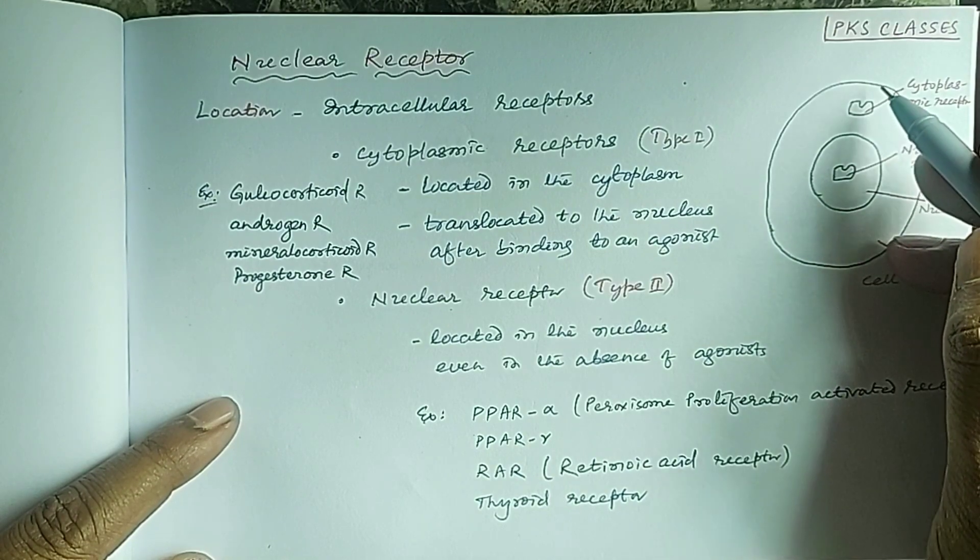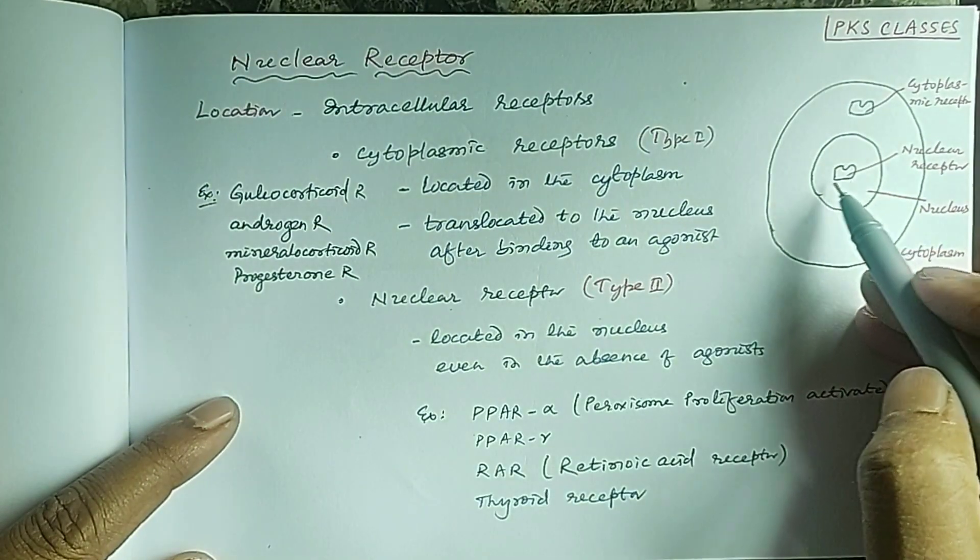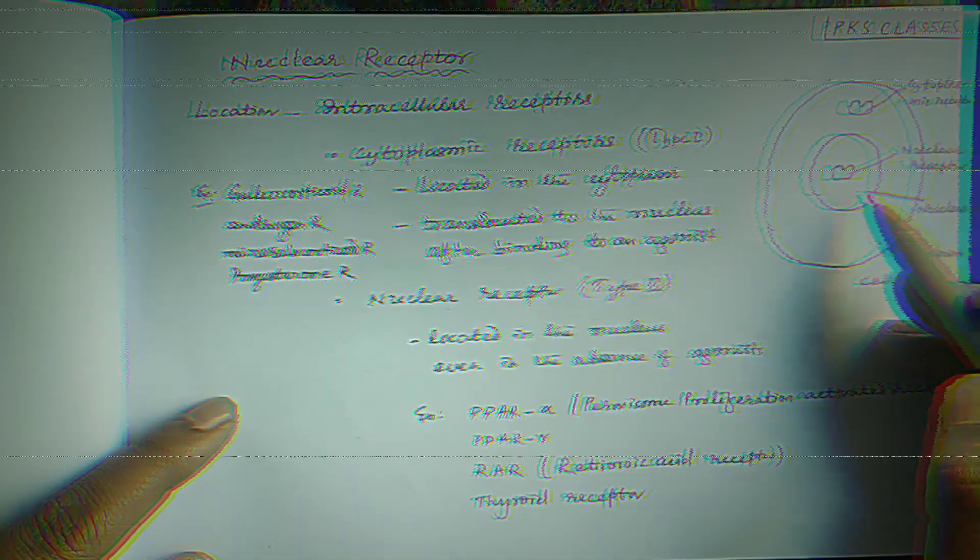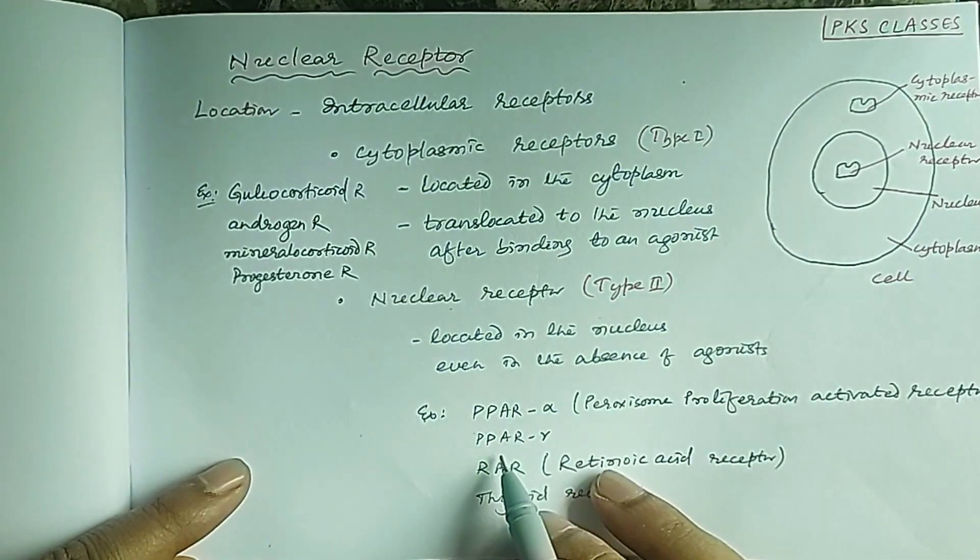The nuclear receptor can either be present in the cytoplasm and after binding with the agonist enter into the nucleus, or they are located directly in the nucleus even in the absence of the ligand. This type of receptor is PPAR gamma.